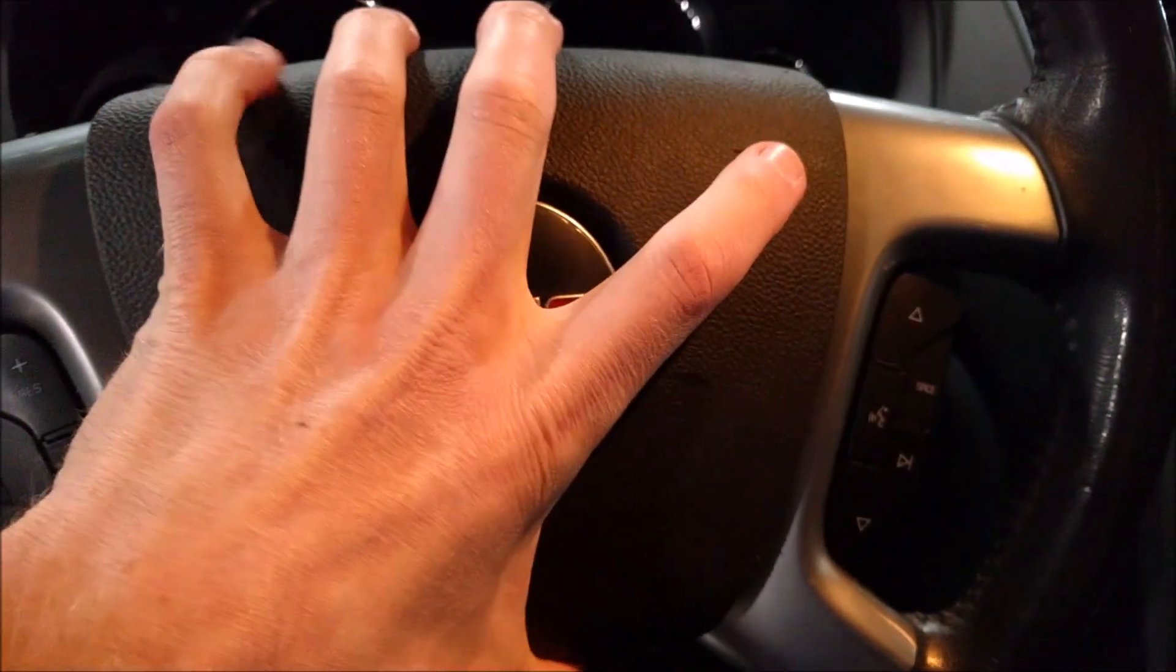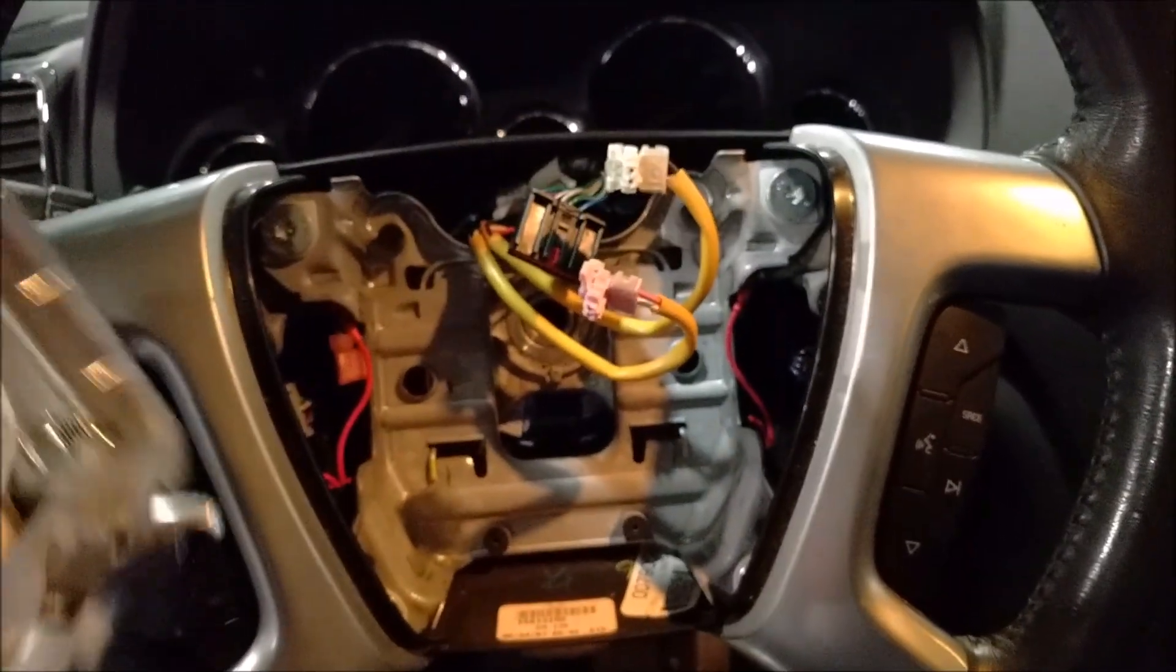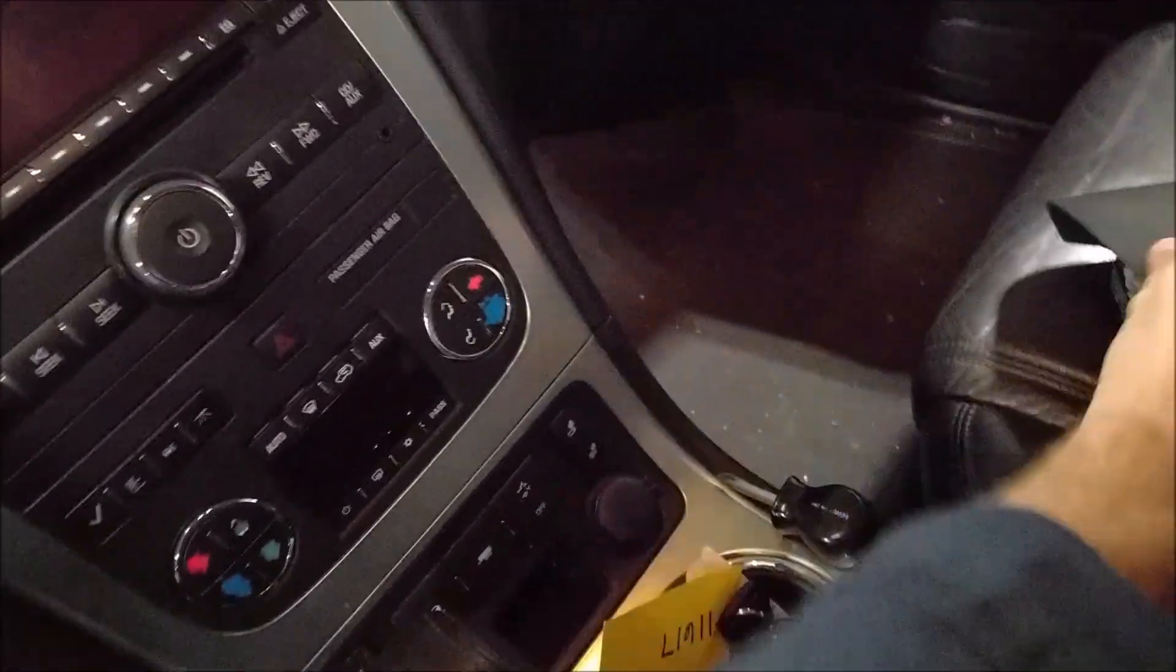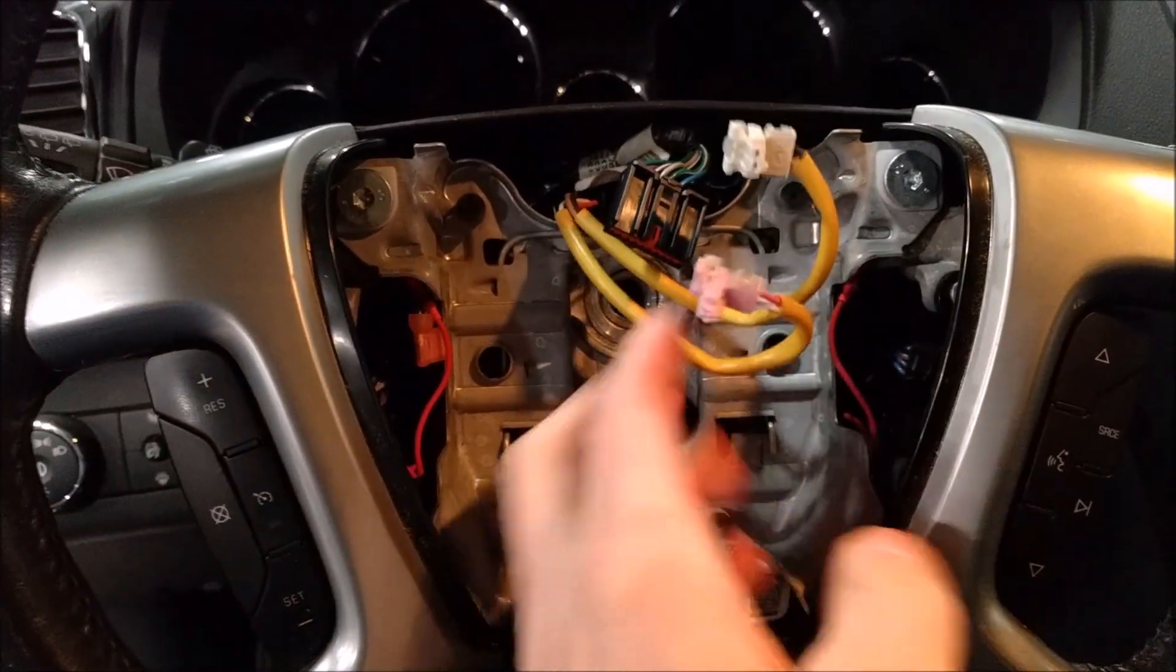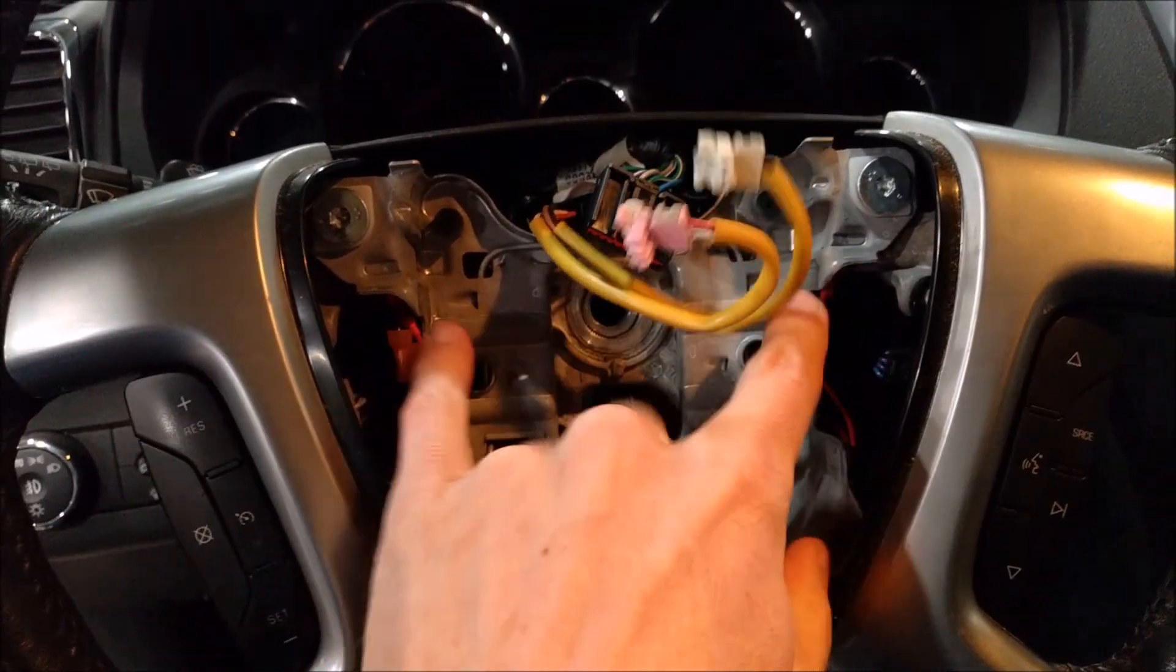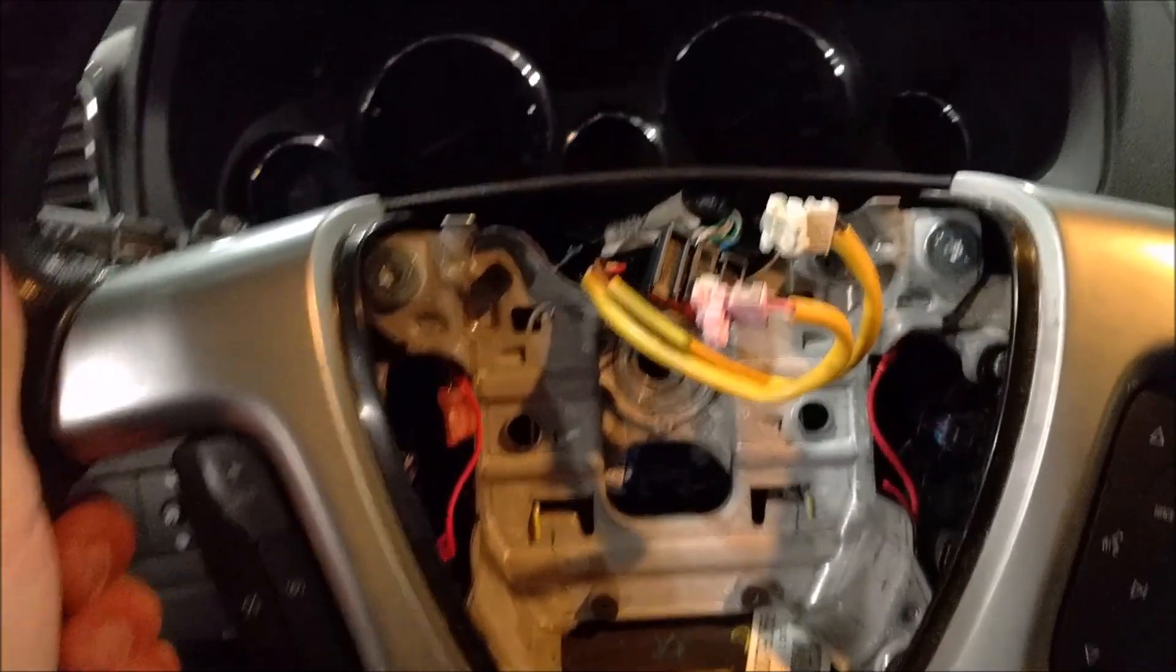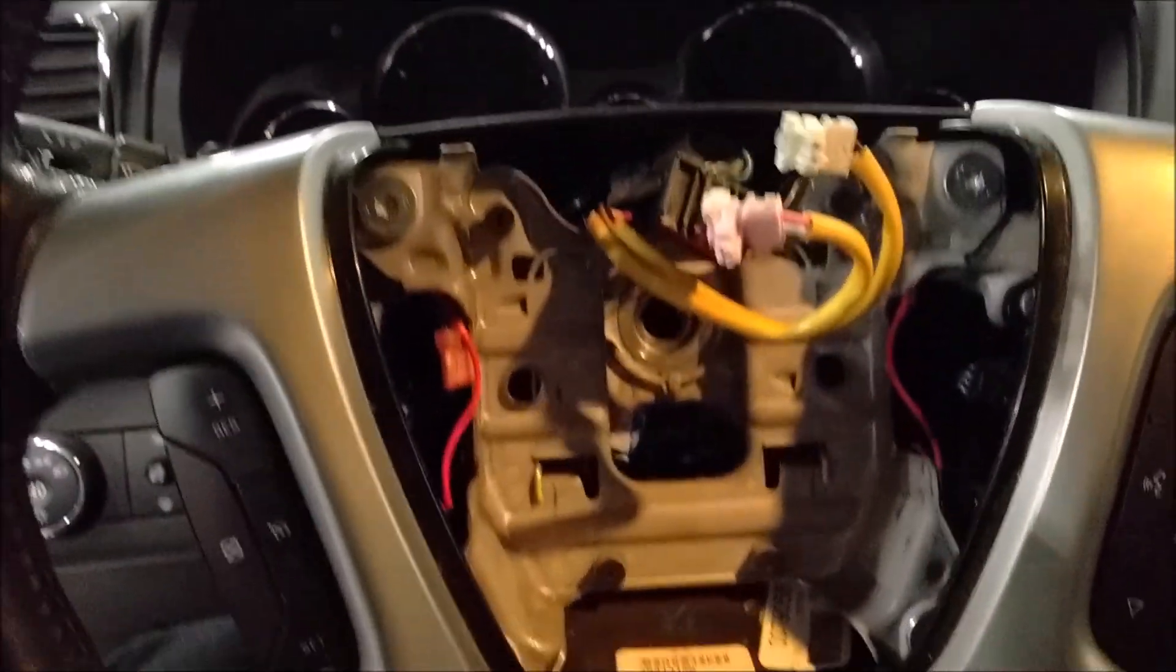So to make that possible we have a clock spring, and to get to the clock spring you'd undo the airbag, which we've already undone. Take the airbag off, and then you remove the steering wheel. There's usually a nut or a bolt in the center, and in many cases you have to use a puller to cause the steering wheel to release from the column.